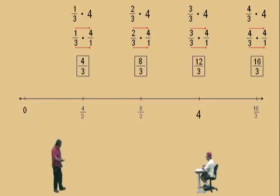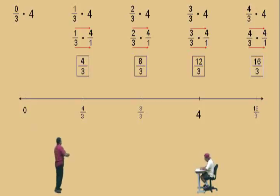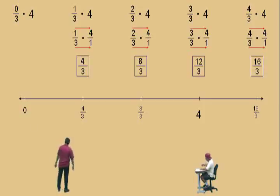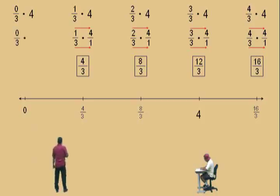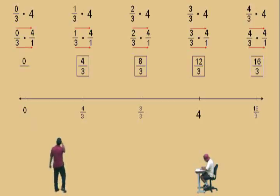What about the 0? Let's do 0 thirds of 4. Charlie, what does 0 divided by 3 equal? We talked about this when we did division — 0 divided by 3 is 0. But we're writing it as a fraction, 0 over 3. Remember, 0 on the top and a non-zero number on the bottom of a fraction means it's 0. How do you write 4 as a fraction? 4 over 1. Multiply straight across the top and straight across the bottom, and notice we get 0 over 3, which is 0.